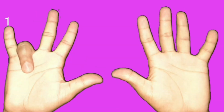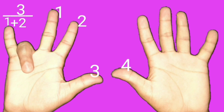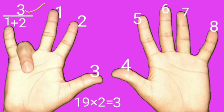One finger is on the left side of the bent finger. One's successor is 2. 1 plus 2 is 3. Now we count how many fingers are on the right side of the bent finger: 1, 2, 3, 4, 5, 6, 7, 8. Left side 3 is there, right side 8 is there. So 19 times 2 is 38.